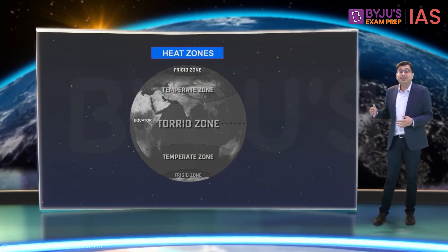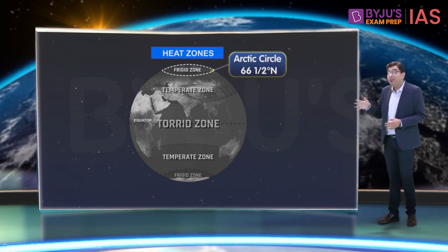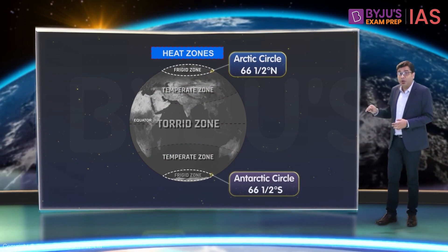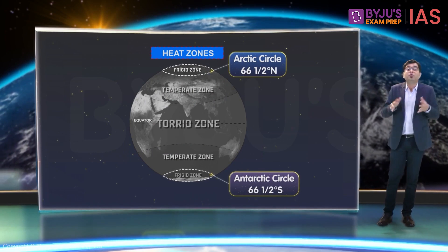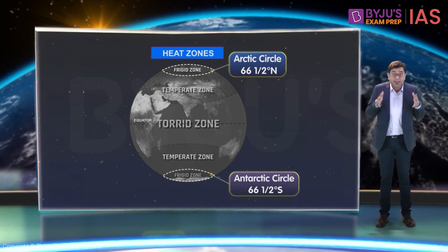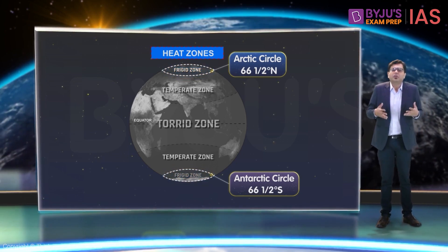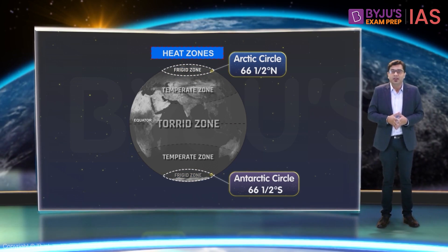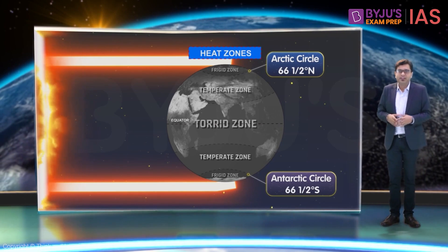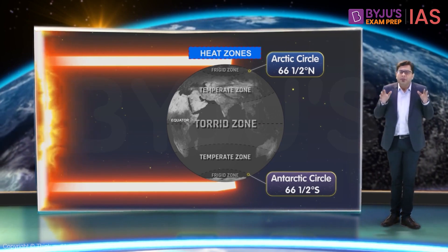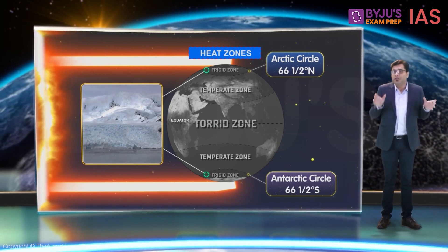Furthermore, the regions lying between the Arctic Circle and the North Pole in the northern hemisphere, and between the Antarctic Circle and the South Pole in the southern hemisphere, observe very low temperatures throughout the year — thus, they are called frigid zones. These are the coldest regions of the world, as the sun's rays fall slanting in this zone. The surface remains permanently frozen under thick snow, and hence the name Frigid Zone.